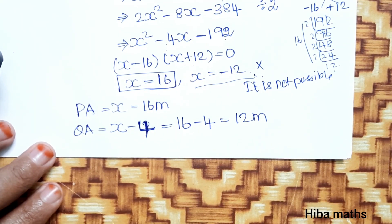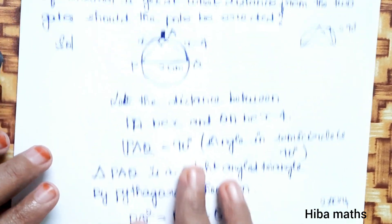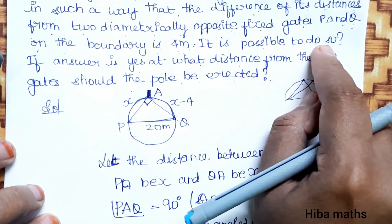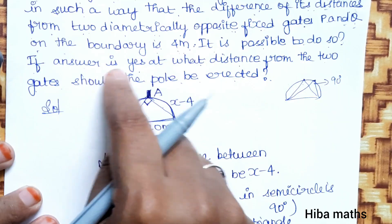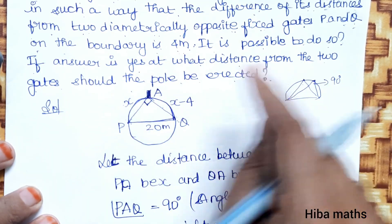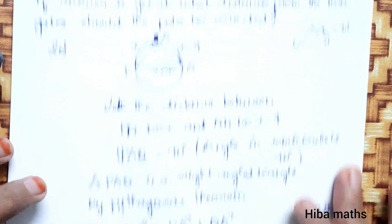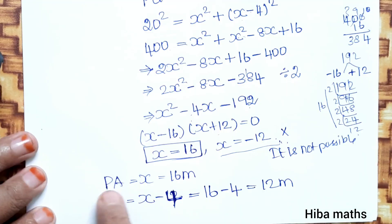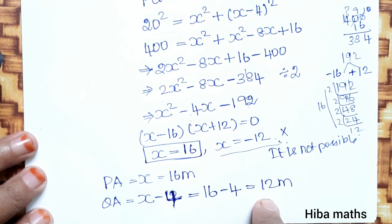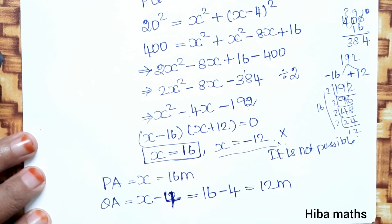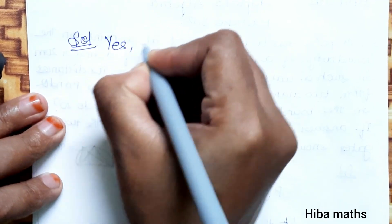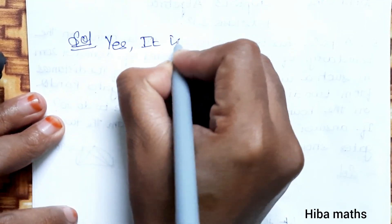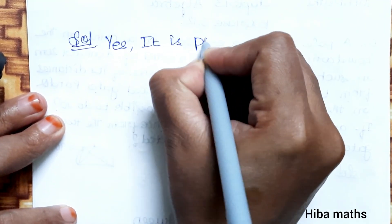It is possible. The pole can be erected at that point. At what distance from the two gates should the pole be erected? The answer is: the distance from gate P is 16 meters and the distance from gate Q is 12 meters. It is possible. Solution confirmed.